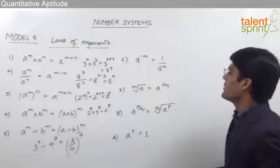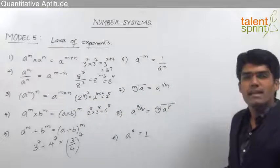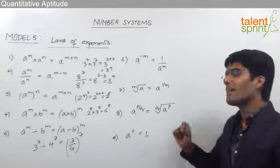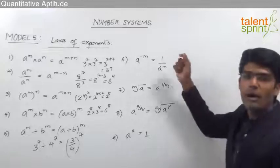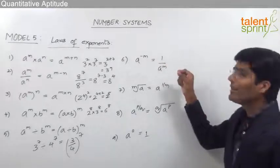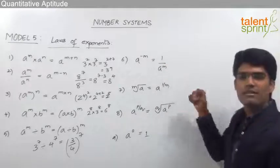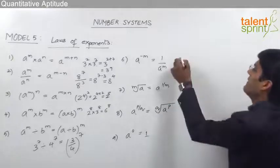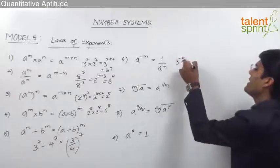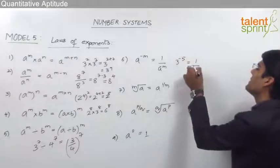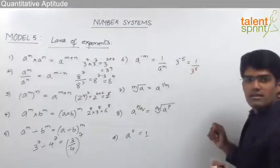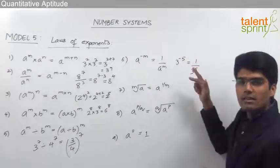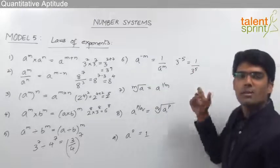Moving on, a power minus m is equal to 1 by a power m. Whenever we have a negative power or negative exponent, it can be taken in the denominator with a positive value. For example, 3 power minus 5 can be equated as 1 by 3 power 5. Once you take the base to the denominator, the sign of the power changes.